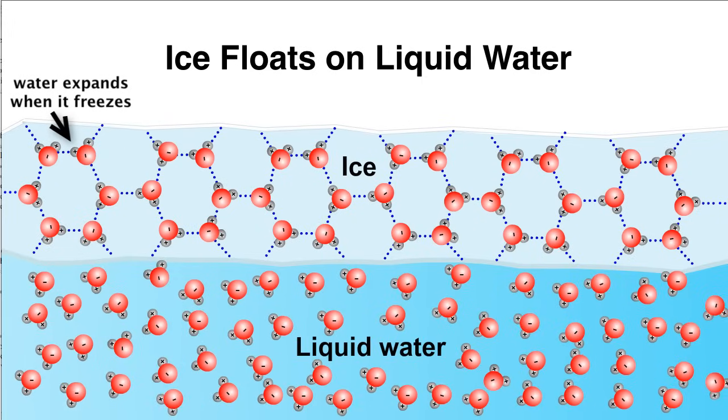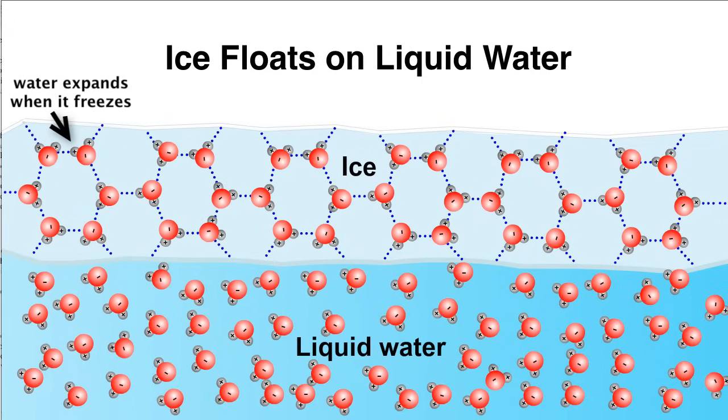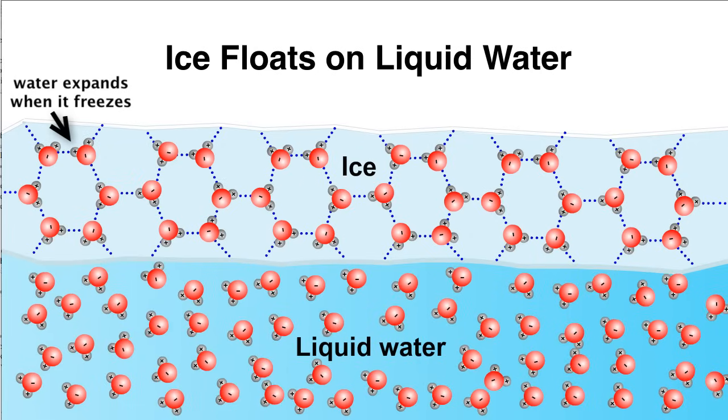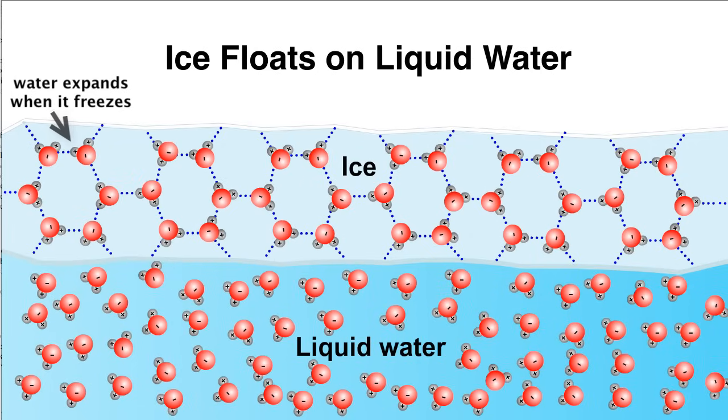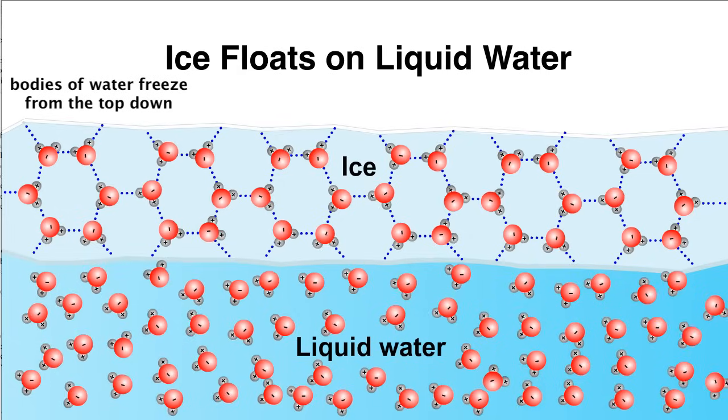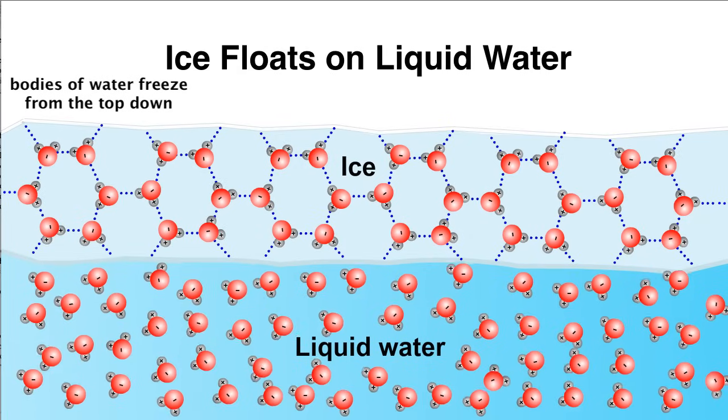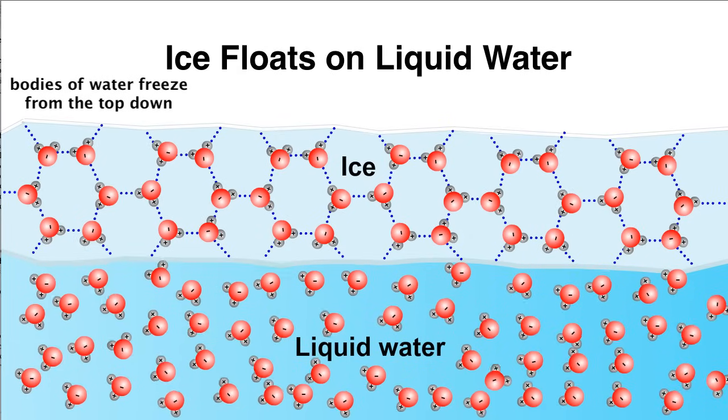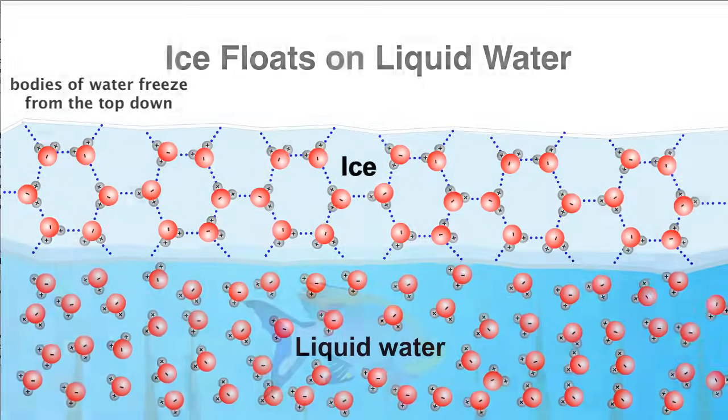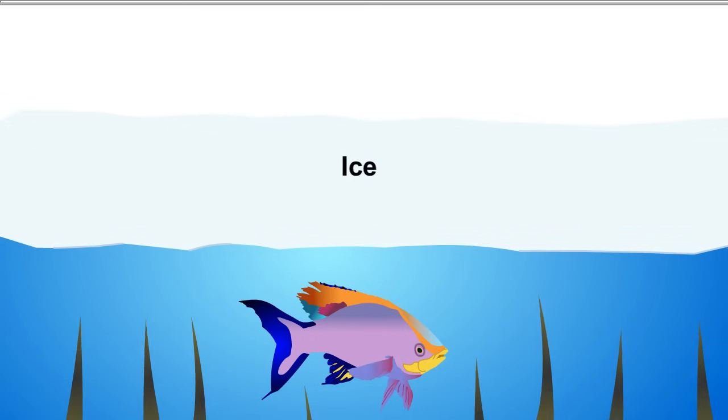If ice were more dense than water, it would sink, and ponds and lakes would freeze solid, making life there impossible. Instead, bodies of water always freeze from the top down. The ice on the surface acts as an insulator to protect the water below from freezing. This protects organisms so they can survive the winter.